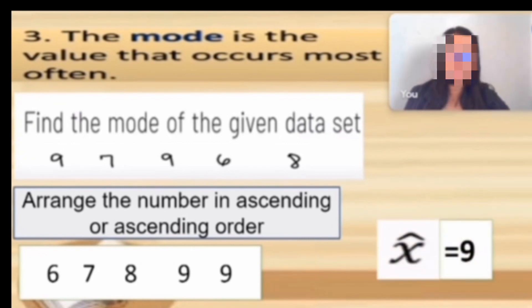We call that unimodal. If two modes, we call that bimodal. If more than three or more modes, we call that multimodal. Is it clear?